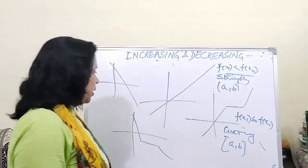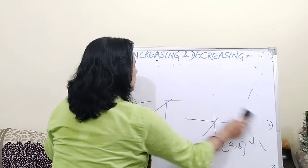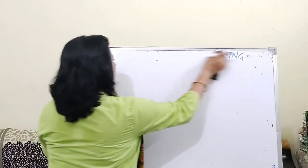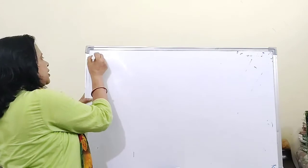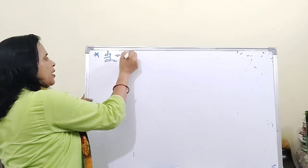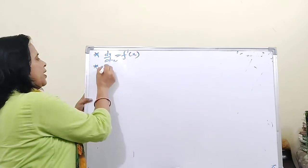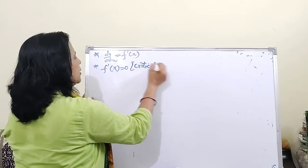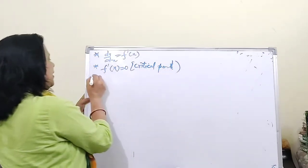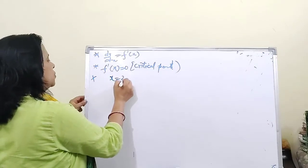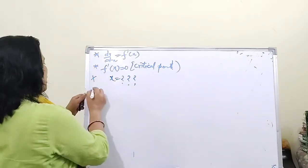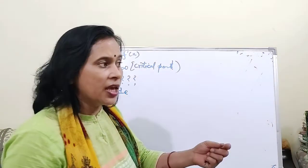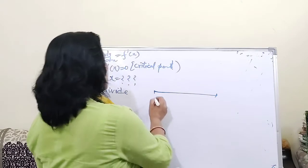Now let us understand the concept of differentiation to find increasing and decreasing intervals. The algorithm is as follows: First step — find dy/dx, which we call f'(x). Second step — set f'(x) = 0 to find the critical points.